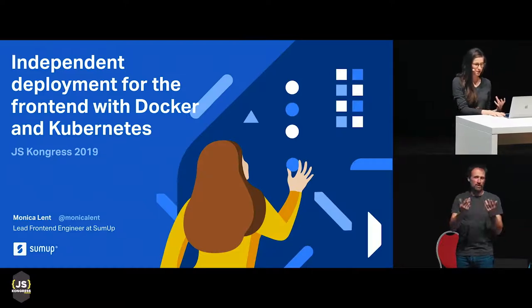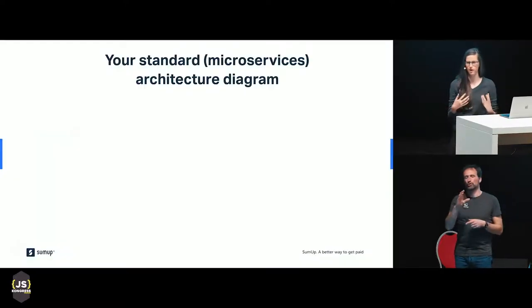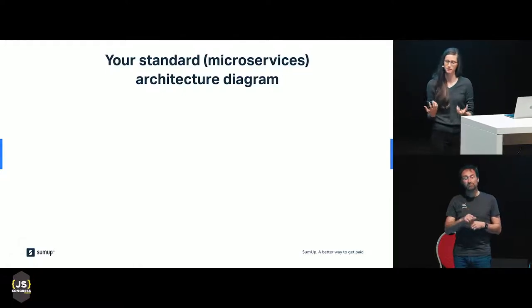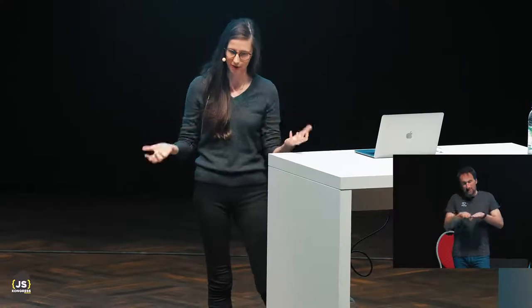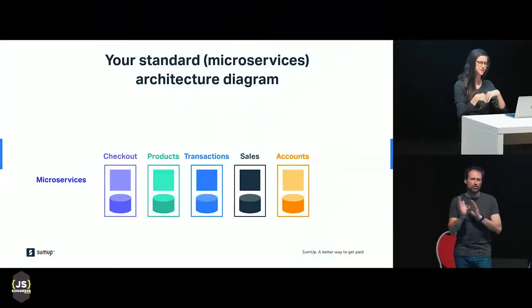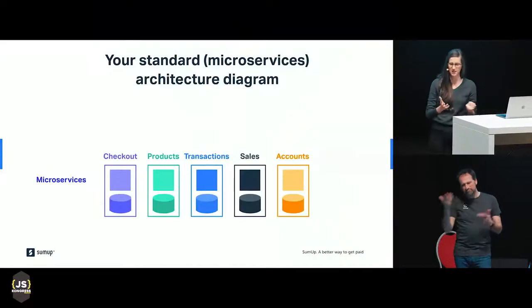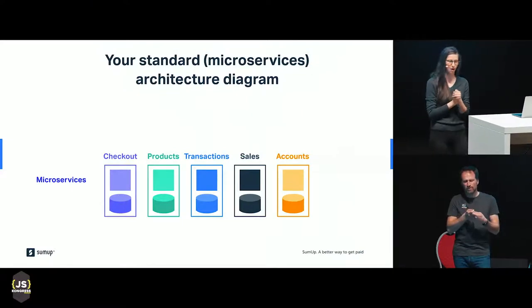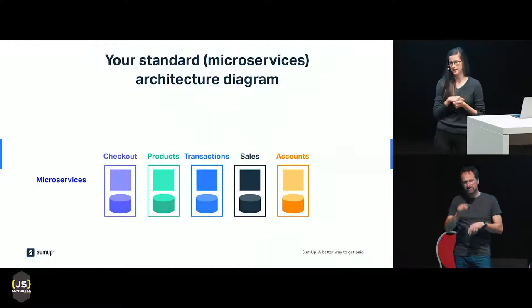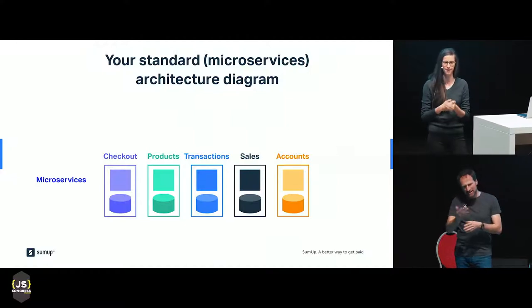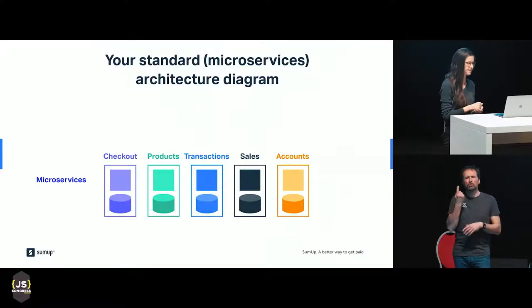Before I talk about what's possible, I want to talk about where we are today. Probably you have a diagram in your office that looks something like this, or maybe you've read it in an architecture book at some point. The base of your diagram begins with your microservices. Each of these lives in a nice bounded context, they maybe own the data you're operating on. They can be deployed and maintained independently, and you have an autonomous team that owns and operates them end to end.